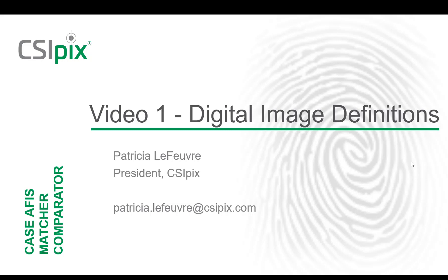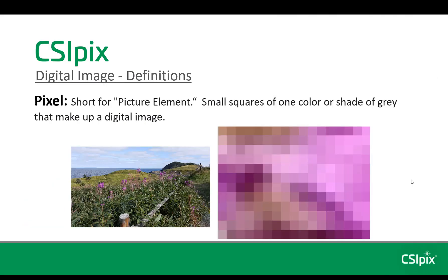I'll do my best to help you. We'll start with the definition of a pixel. Pixel is short for picture element. They are small squares of one color or shade of gray that make up a digital image. So when you zoom into a picture, you eventually see these squares of one color. These are the pixels. In this example, these are the pixels that you see when you zoom into one of these flowers here.